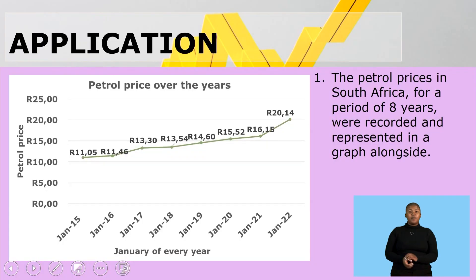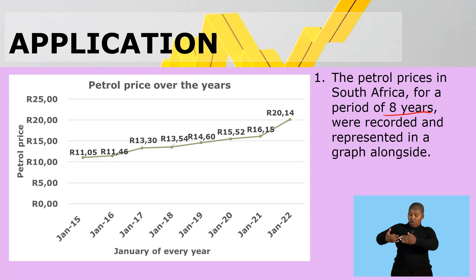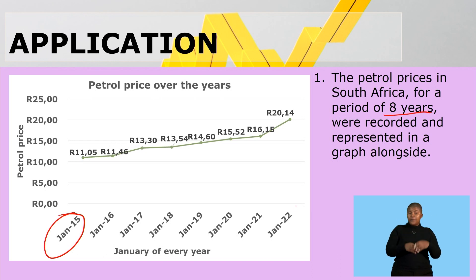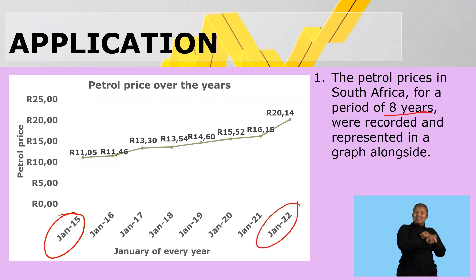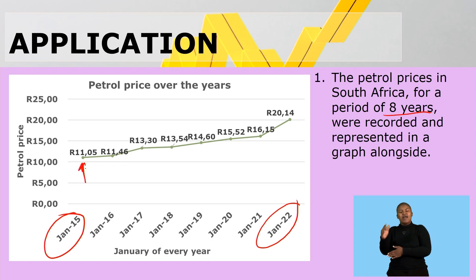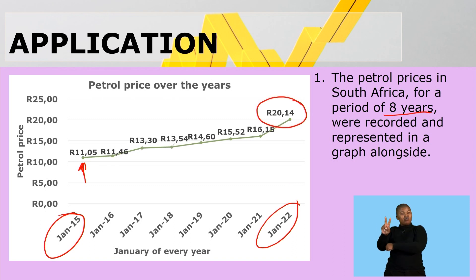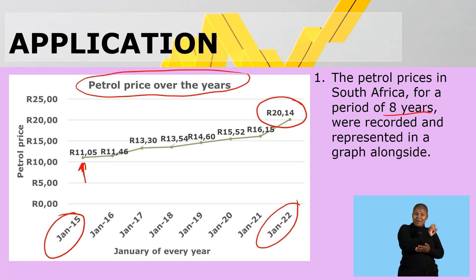Welcome back. Let's look at some application questions. The petrol prices in South Africa for a period of eight years were recorded and represented in the graph alongside. You'll see it started at January 2015 and ended at January 2022. The lowest price was 11 rand 5 cents and in January 2022 it was 20 rand 14. So that is the petrol price over the years.